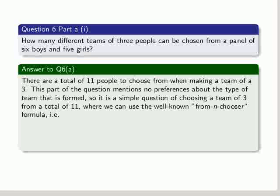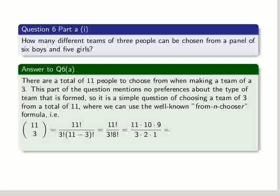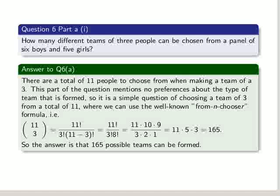We can use the well-known n choose r formula. So we use n equal to 11 and r equal to 3, so we get the factorials there which we expand out. We get 11 factorial over 3 factorial over 8 factorial. 8 factorial will cancel from the numerator and we get that expression which we can simplify and we get 165. So 165 possible teams can be formed.